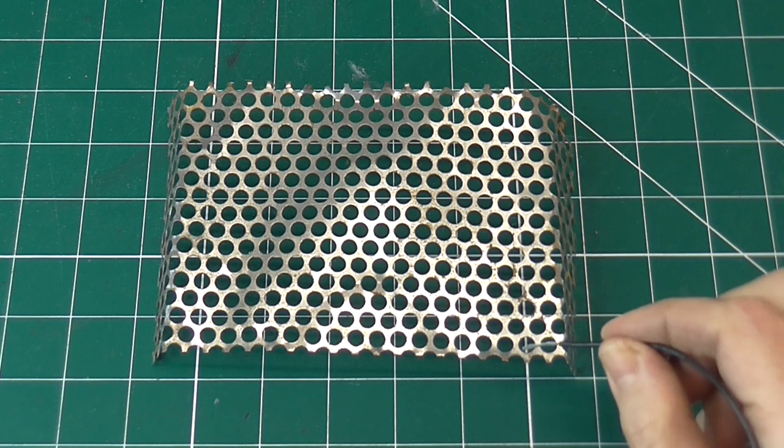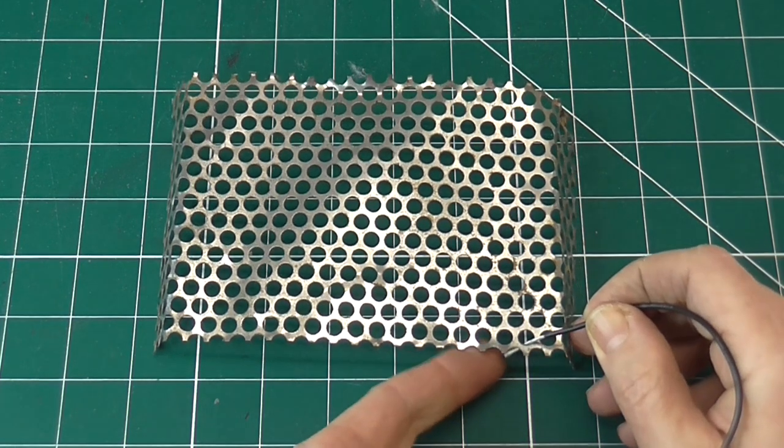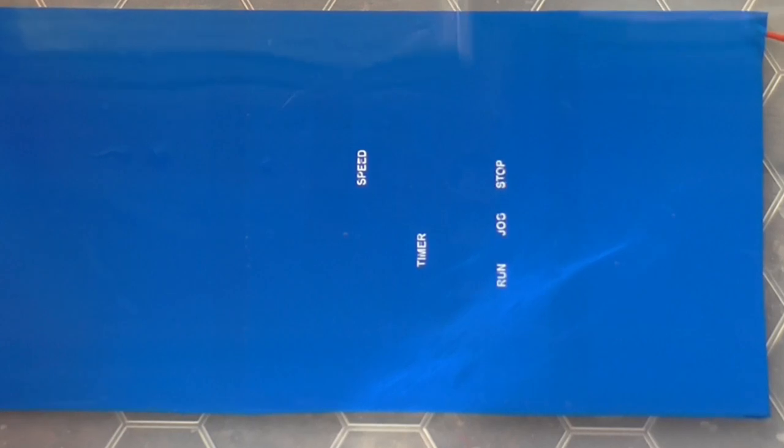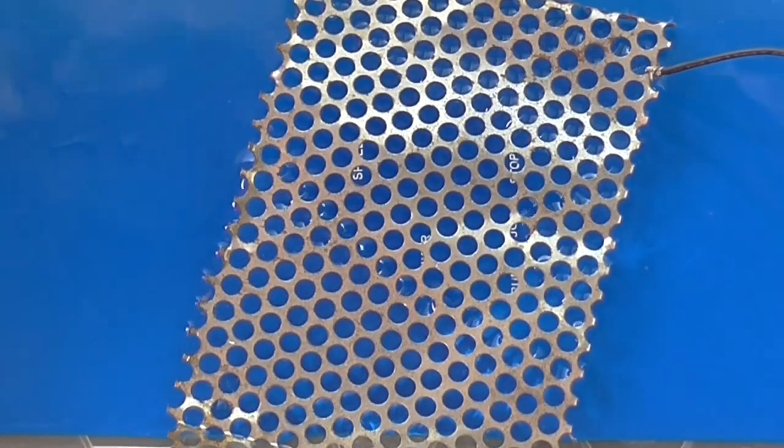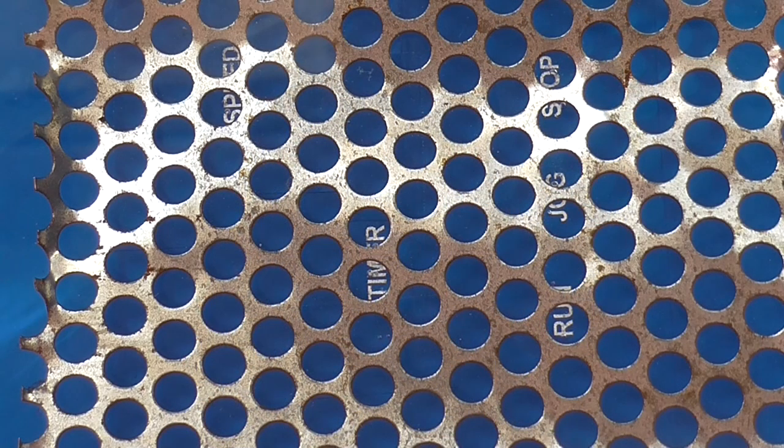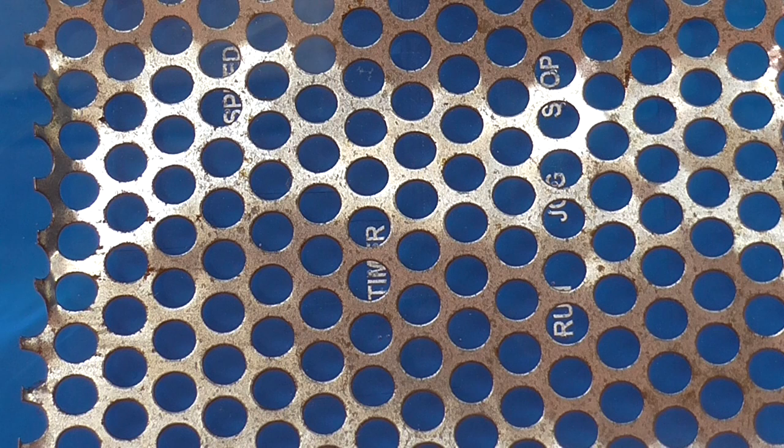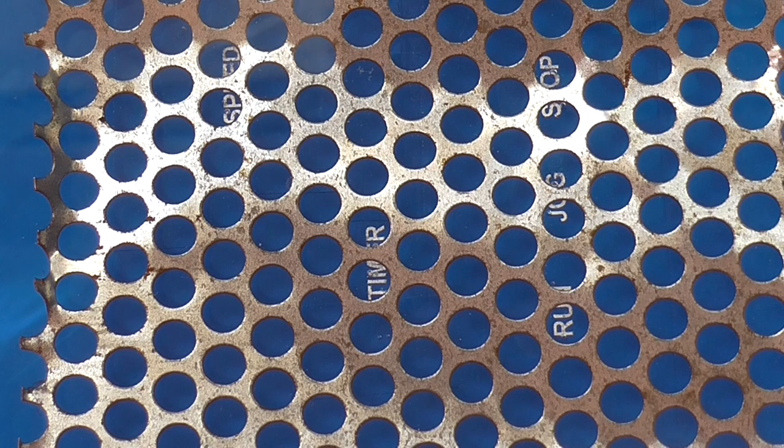This is the cathode, connected to the negative terminal of the power supply. It should be an even distance from the areas that will be etched. If it's closer to some, then those areas will be etched faster than others. Again the cathode does not have to be the same metal as the workpiece. This is a piece of stainless steel. The holes help see what's going on but aren't essential.